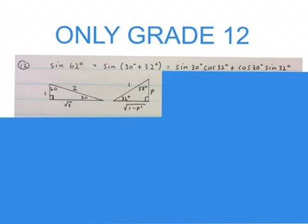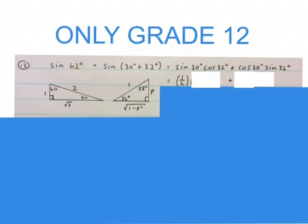Now we expand this with a compound angle identity that you should know or get it on a formula sheet. Sine 30 is O over H standing at 30 degrees, opposite over hypotenuse. I wrote it there. Cos 32 is A over H. I stand at 32. My adjacent is here. My hypotenuse is there. I wrote it over there. My cos 30 is A over H standing at 30 degrees, adjacent over hypotenuse. I wrote it over there.